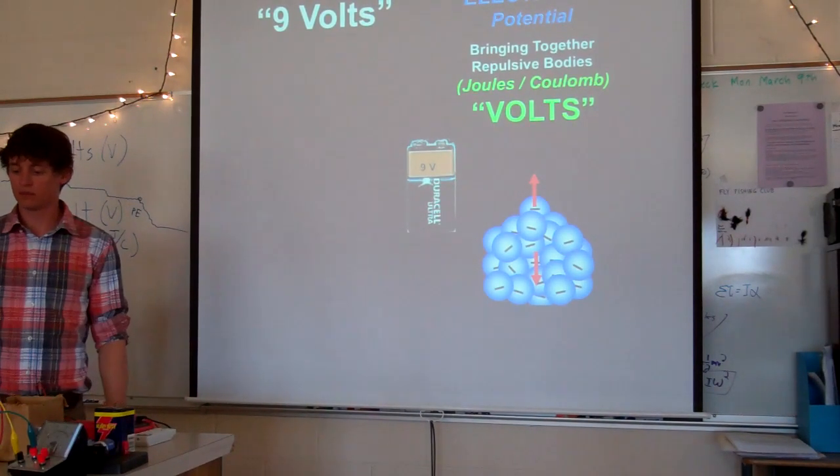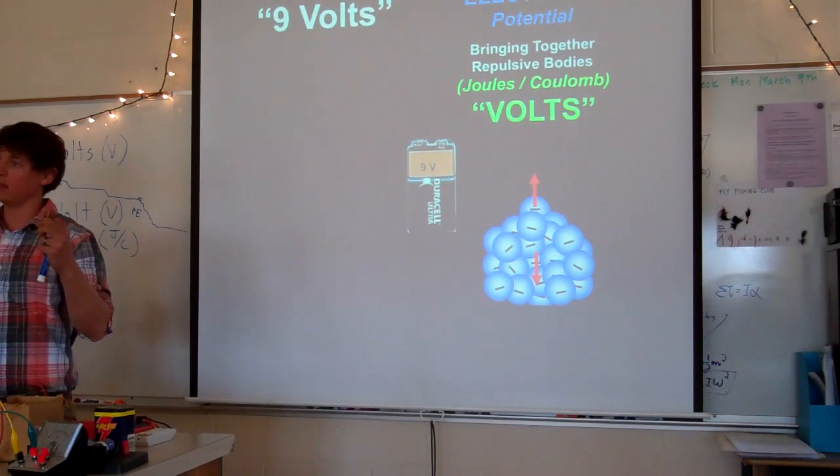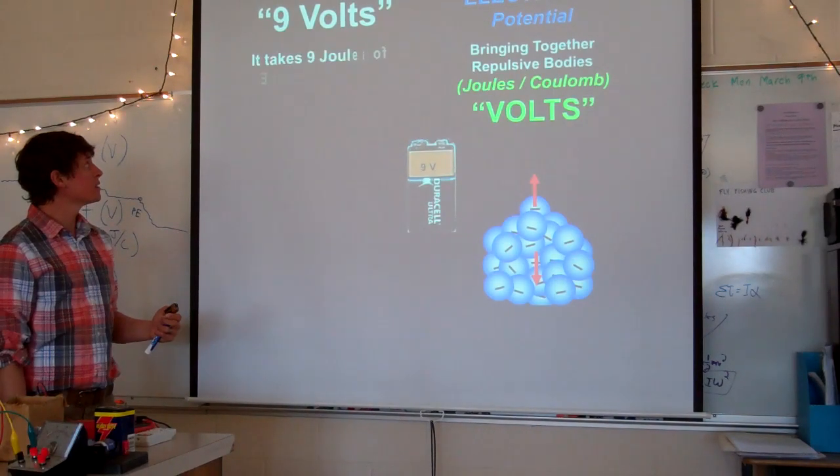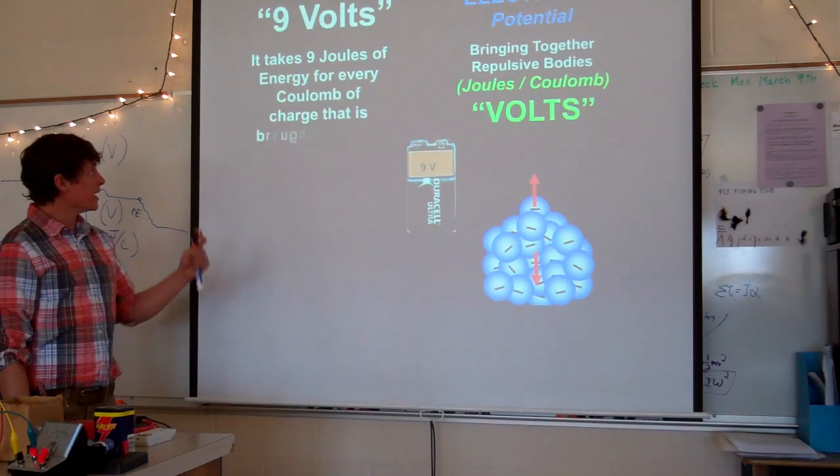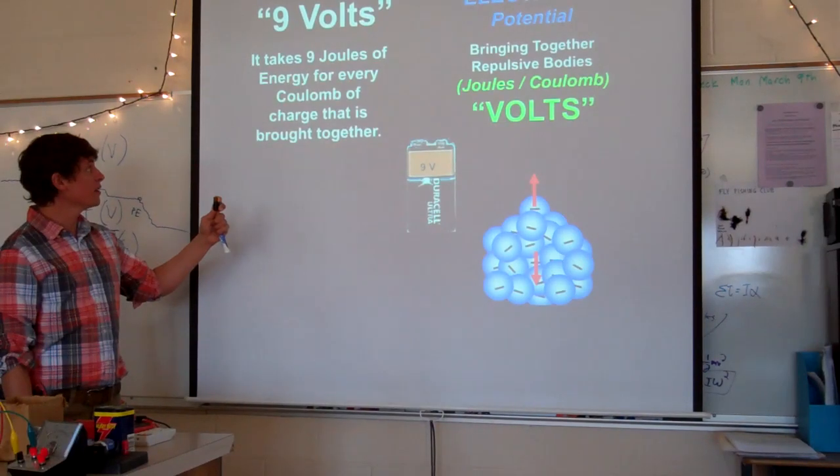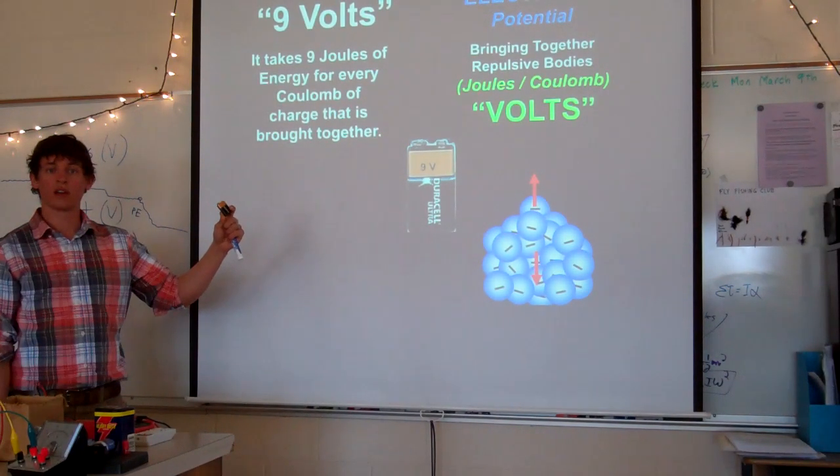It's kind of weird because the variable and the unit have the same name and symbol. And the symbol is capital V. But we need to remember that volts are also joules per coulomb. This will make a little bit more sense in the next couple slides. Energy per unit charge. So let's talk about a nine volt battery. What does that mean, nine volts?